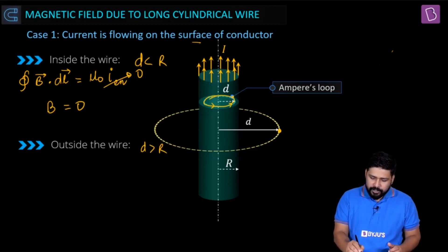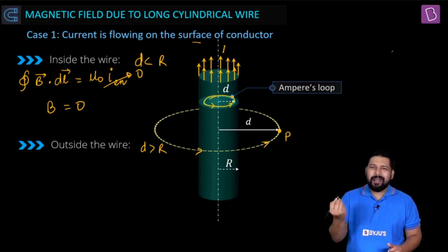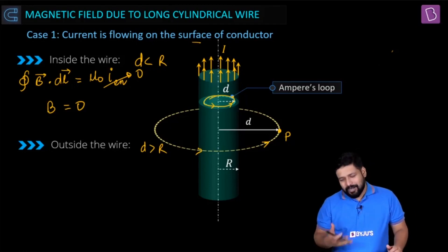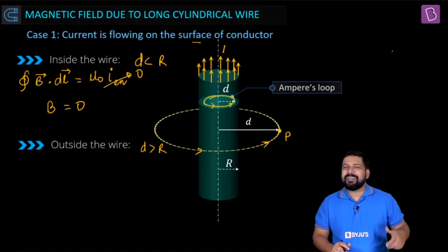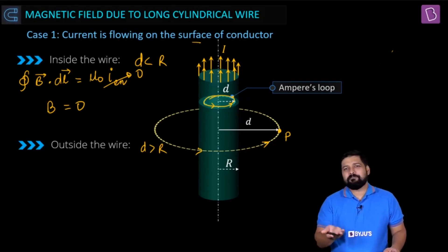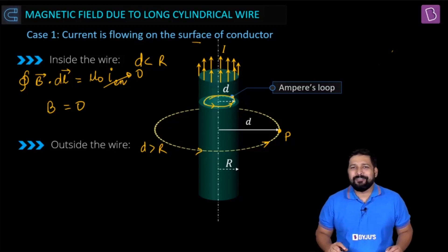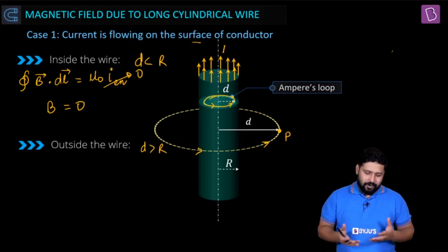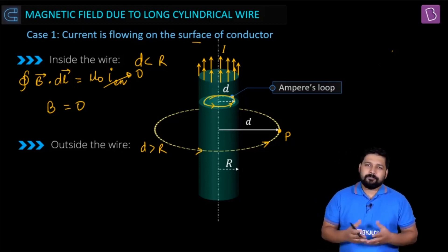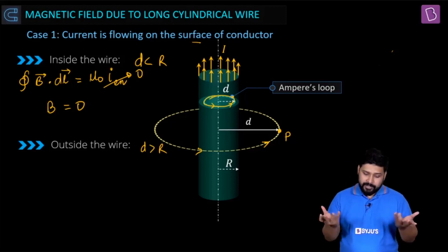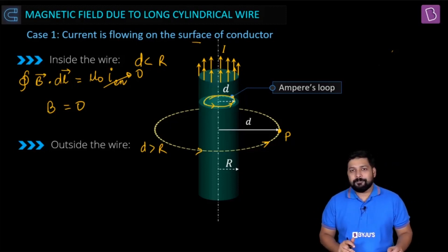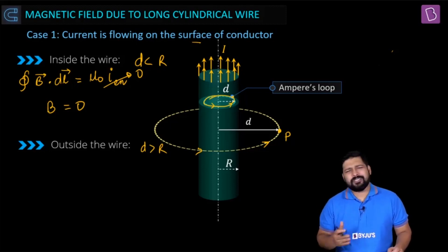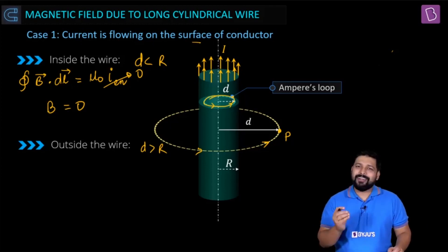Now let's take the second situation: we are going outside the wire. We have a point P outside the wire. Let's designate the direction of the loop. Make it a habit — once you've practiced five or ten problems, you'll understand that you can assume anticlockwise direction and solve it. Different books say different things, so the choice is yours.